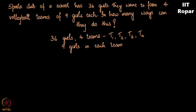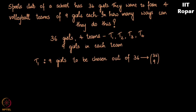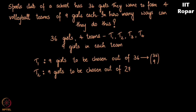To form team 1, nine girls will be chosen from 36 girls. In how many ways? In 36 choose 9 ways. Now for team 2, nine girls will be chosen, but for team 1 nine girls have already been taken and we have 36 minus 9 which is 27. So for team 2 we have 27 girls remaining, out of them nine girls have to be chosen. This can be done in 27 choose 9 ways.